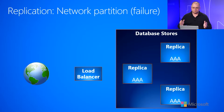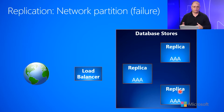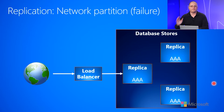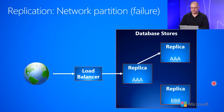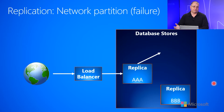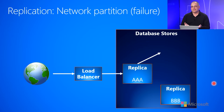To help drive these concepts home, I've created an animated slide. Here I have three replicas of my data, and they all have AAA as the data — all data is consistent across these three replicas. A network request comes in to change the data from AAA to BBB. The load balancer goes to the primary replica, which tells the two secondary replicas about the change. The bottom replica successfully changes from AAA to BBB and acknowledges. But the top-right secondary replica crashes — we now have a network partition, and two replicas have different data: one has AAA, one has BBB. The data is inconsistent.